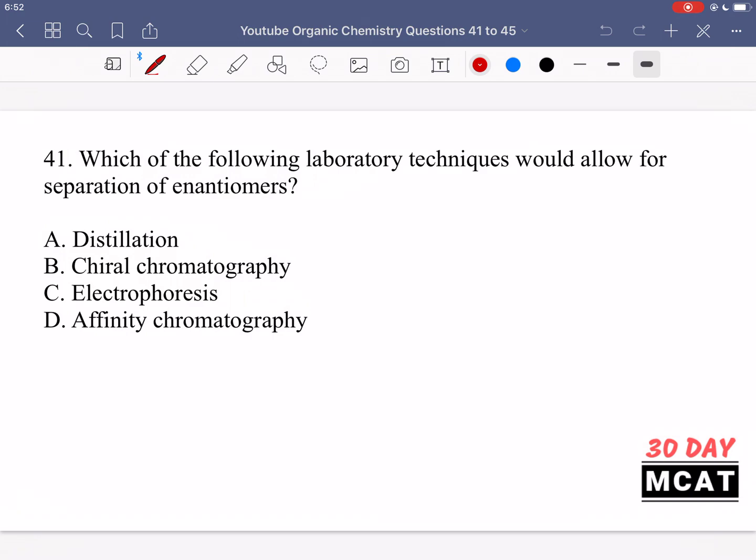Here's question 41. It asks which laboratory technique would allow for separation of enantiomers. With enantiomers, you have to remember that they have different optical activity. However, they have the same elements and the same connections, so they have the same intermolecular forces. Therefore, distillation would not be good for separating enantiomers because this is based on boiling point, and enantiomers will have the same boiling point.